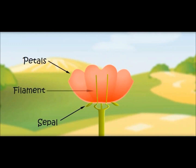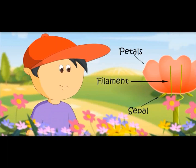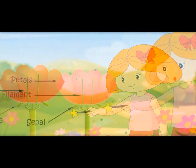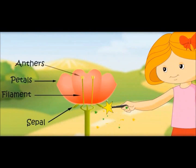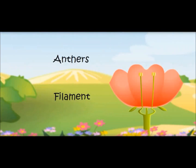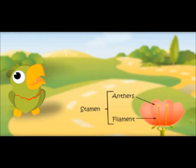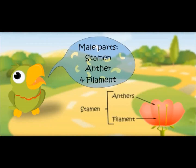Here come the filaments. Bring a few anthers too. These filaments and anthers are the male parts of the flower. Jointly, these are called stamen. Male parts: stamen, anther, and filaments.